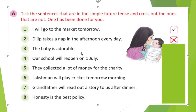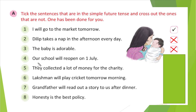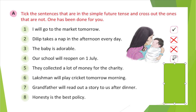Third sentence: The baby is adorable. This is a universal truth — we are generally showing what a baby looks like, so it is not a future tense — that is also wrong. Fourth sentence: Our school will reopen in first place. School will reopen — it has not happened yet and it will happen in the future — so this sentence is simple future tense, and this is the correct answer.